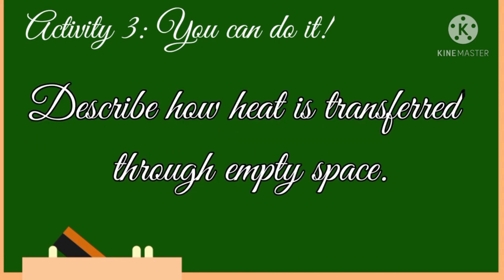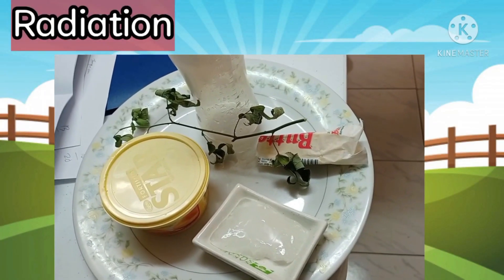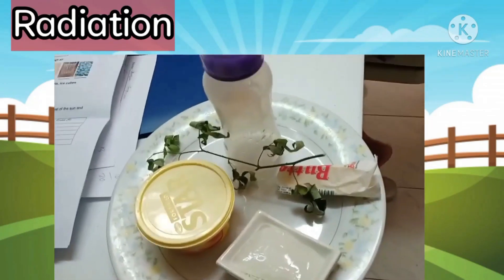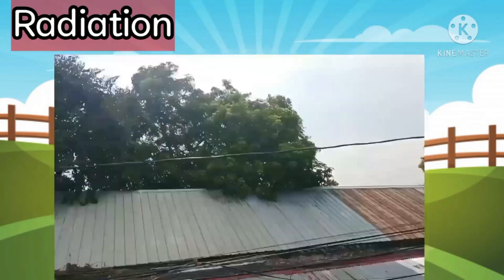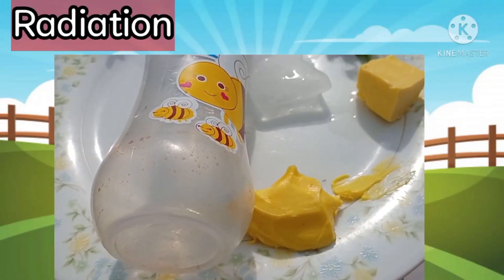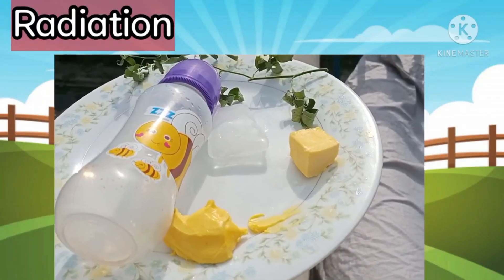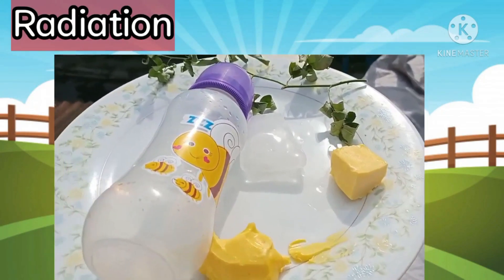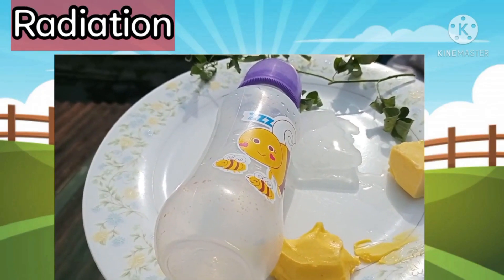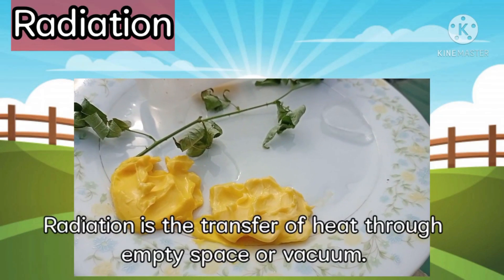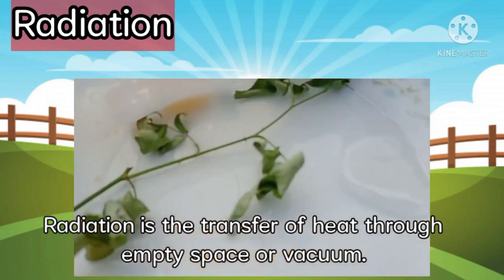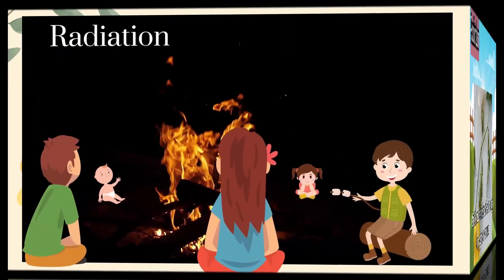Let's move on to activity number three. In this activity, you will describe how heat is transferred through empty space. The materials needed are: a plate, margarine, twig, butter, plastic bottle, and ice cubes. First, put all the materials on the plate. Then go outside and place all the materials under the sun. Observe what happens to the materials after five minutes. After five minutes, as we can see, the twig and the bottle remain the same, while the ice, butter, and margarine melted. Ice cubes, margarine, and butter melted due to radiation.